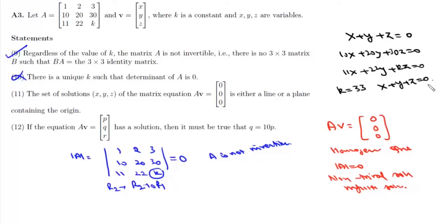In this case, all solutions lie on this plane. If k is not equal to 33, then we have two non-parallel, non-identical planes that intersect in a line, so statement 11 is correct.